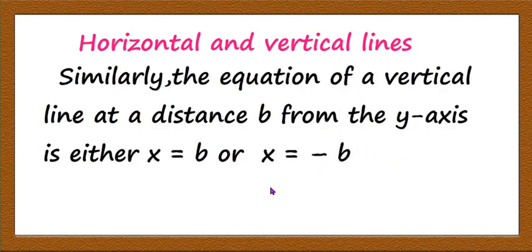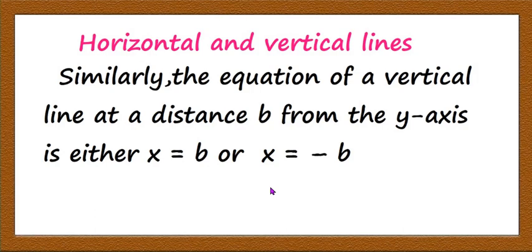These are the figures of the horizontal line. This line is y = -2 and this line is y = 2. In general, it is y = -a if it is below the x-axis and y = a if it is above the x-axis. Similarly, the equation of a vertical line at a distance b from the y-axis is either x = b or x = -b. The y-axis is also a vertical line and its equation is x = 0.